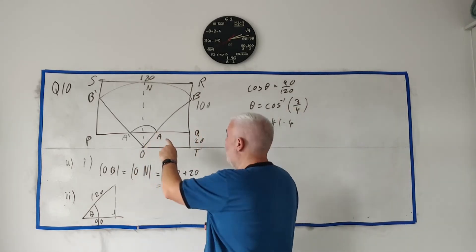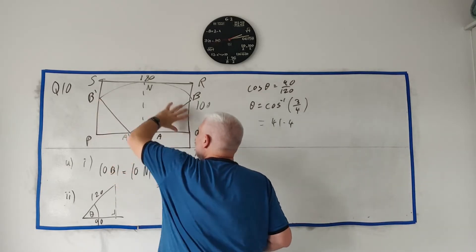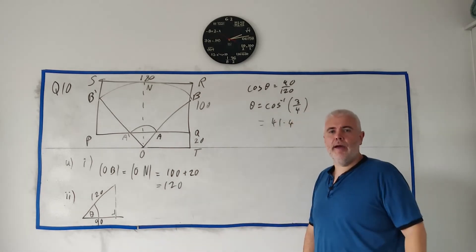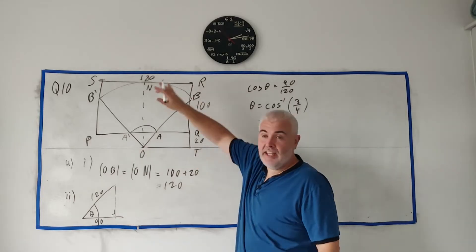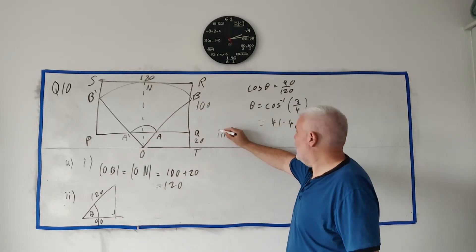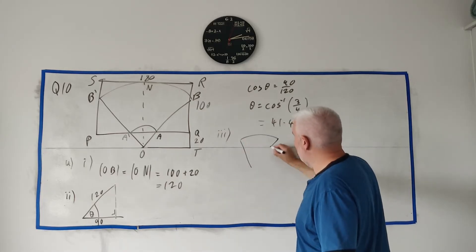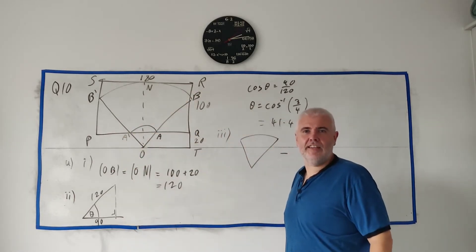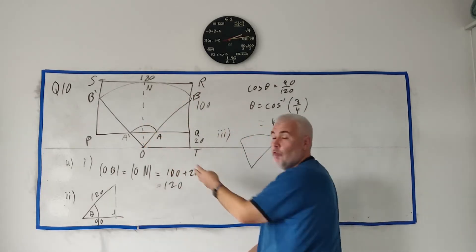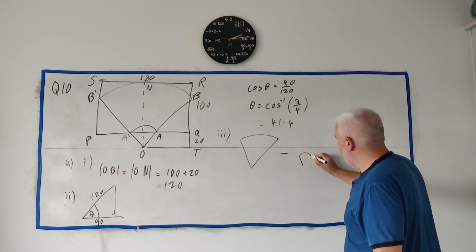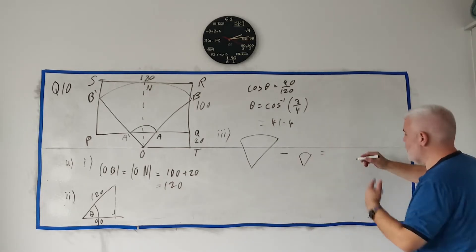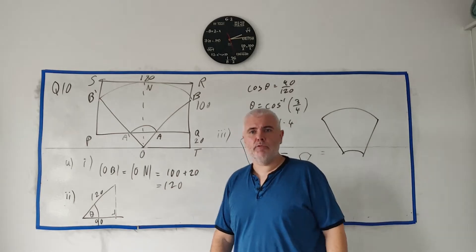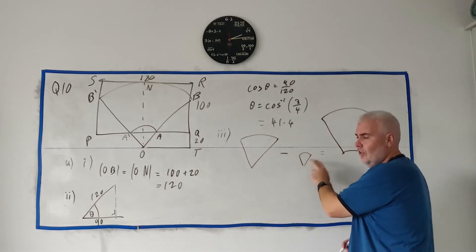Part 3 asks for the area of shape ABB'A'. We find it by taking the area of the large segment and subtracting the smaller segment. So it's the big sector area minus the small sector area — those two regions combine to give the shaded shape they're looking for.